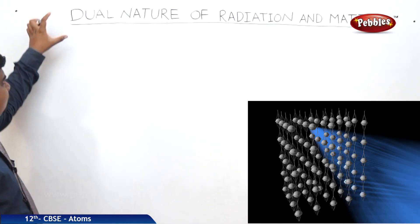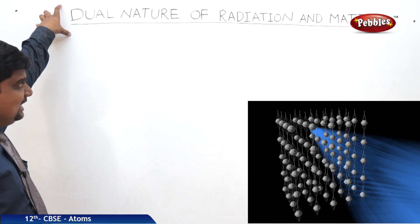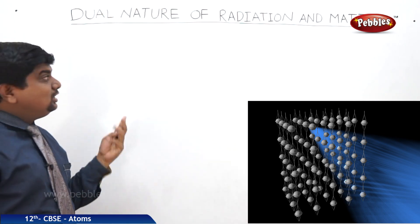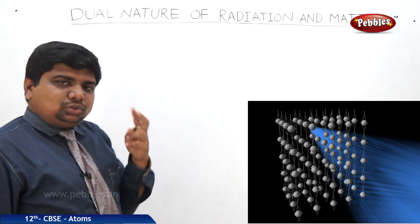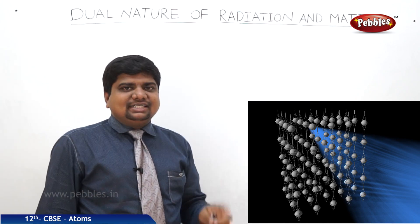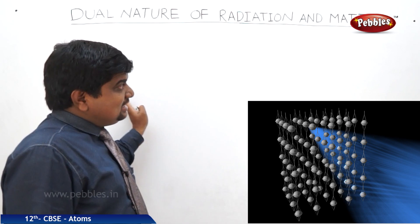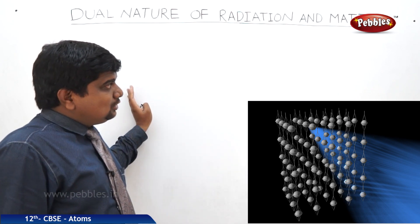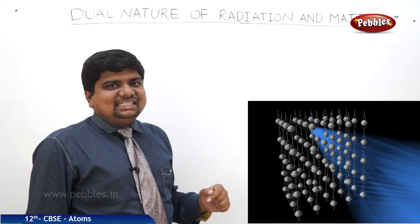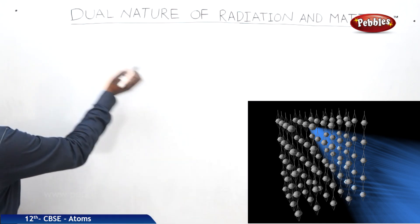We are going to see the dual nature of radiation and matter. Dual nature means two different natures of the matter waves: particle nature and wave nature. Before going to see the whole analysis of this dual nature, we should see the introduction about this chapter.